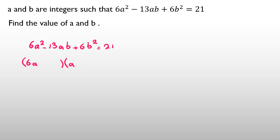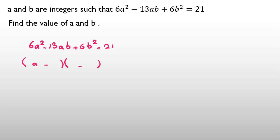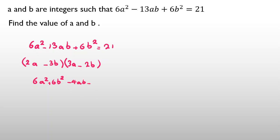To factorize, consider placing (2a minus 3b)(3a minus 2b). This gives 6a² and also 6b². The cross terms are: 2a times negative 2b gives negative 4ab, and 3a times negative 3b gives negative 9ab, which together give negative 13ab. That is correct — the factorization works.